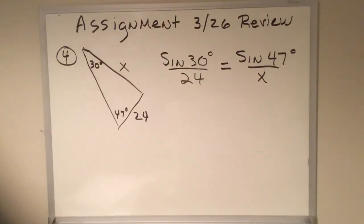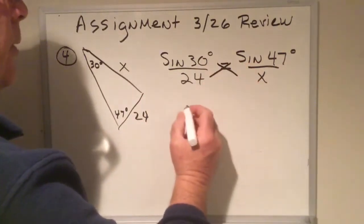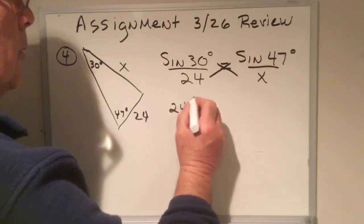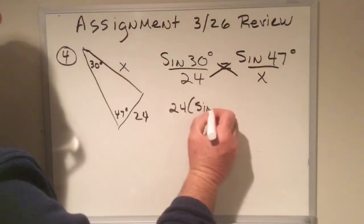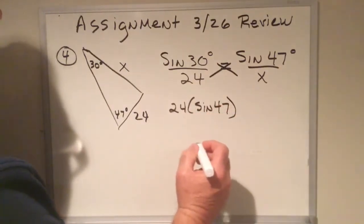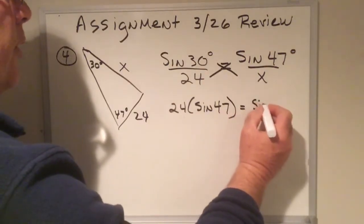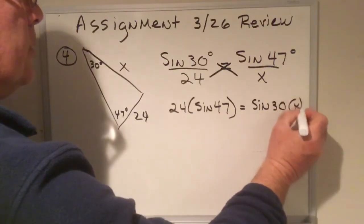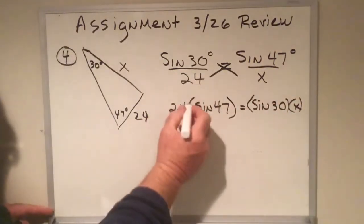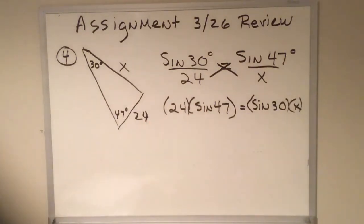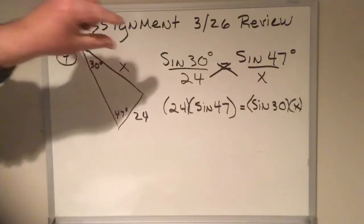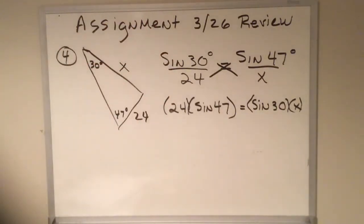You're looking, first and foremost, for an angle measure and a given side length across from it, and there it is. Now we're going to cross-multiply and solve. We'll be deliberate in our cross-multiplication here. We're going to take 24 times sine 47. On the other side, sine 30 times the x. I'm putting them in parentheses to highlight that they are factors. We're multiplying. So there's our equation after you cross-multiply. There's your setup.